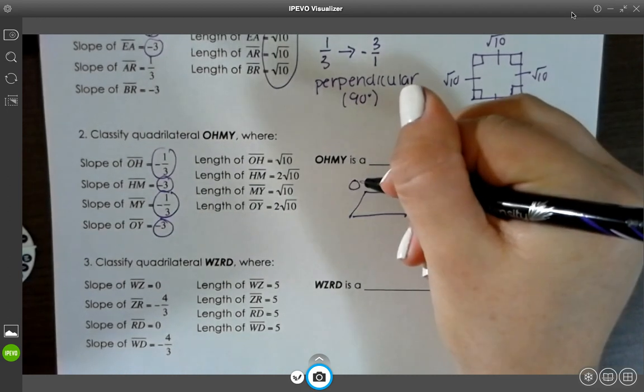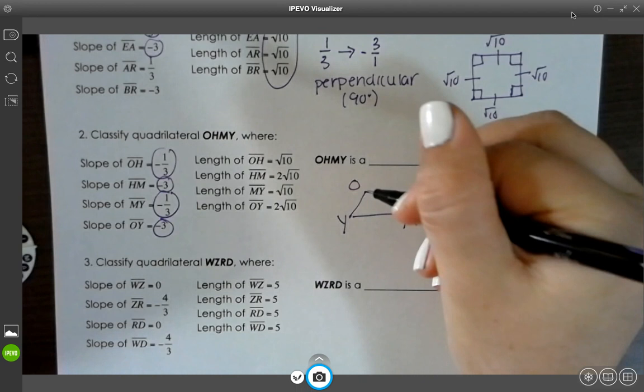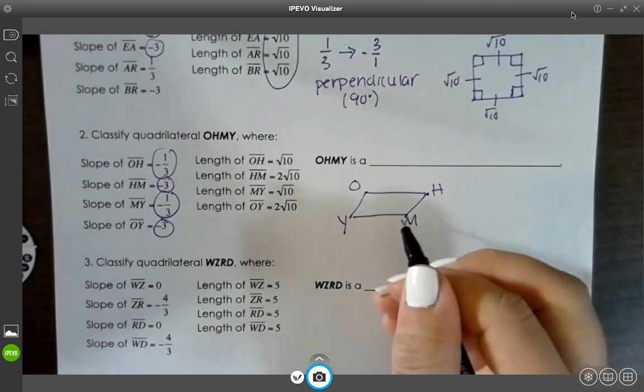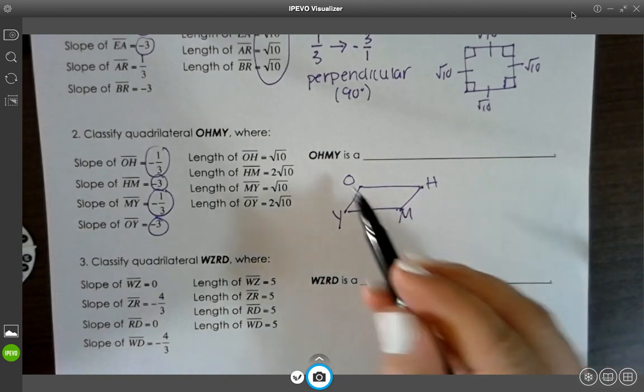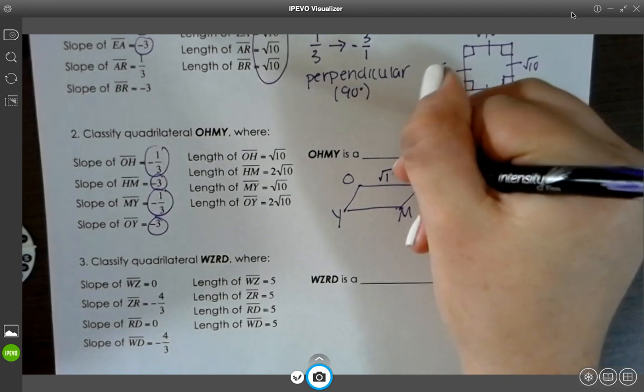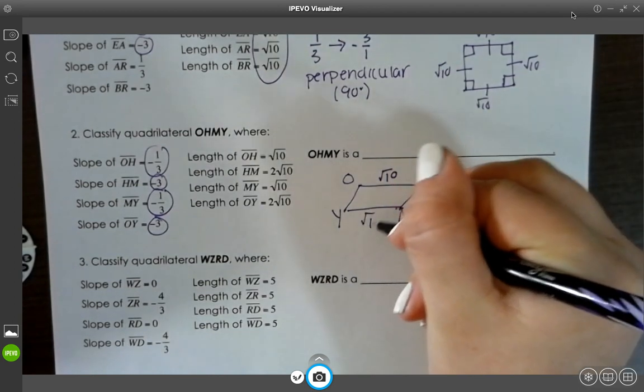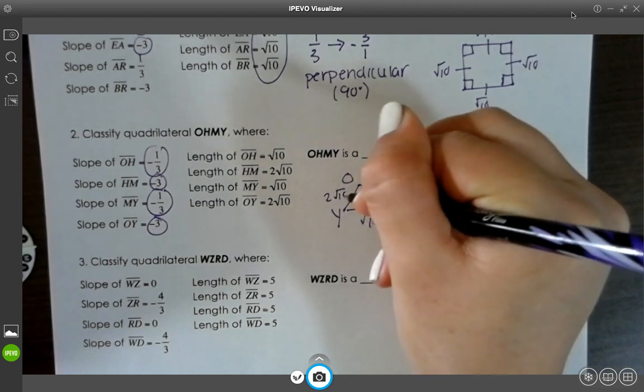And then, let me see, the quadrilateral O, H, M, Y. So O, H and M, Y are parallel. H, M and O, Y are parallel. This is square root of 10. This is square root of 10. And this is 2 root 10 and 2 root 10.